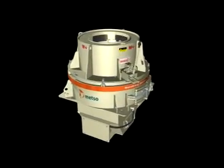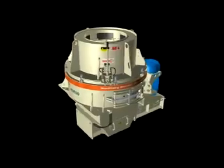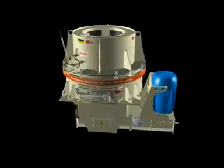What sets the Nordberg Barmak B-Series VSI apart from other types of crusher is that it uses rock to crush rock.